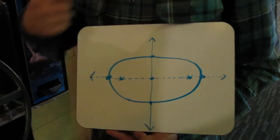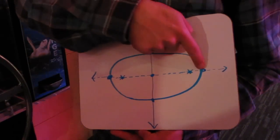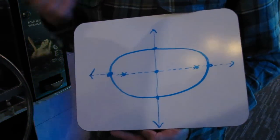This is the center of the ellipse. These points right here are called the vertices. They lie on the major axis.